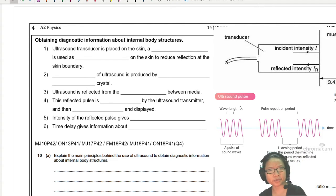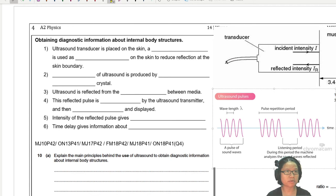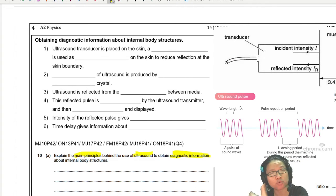This is a more popular essay question that they could ask you, which is to explain the main principles behind the use of ultrasound to obtain diagnostic information. To recap, the previous essay question was explain generation or detection of ultrasound. Here we're going to talk about how we use ultrasound to look into the internal body structure of a human being.